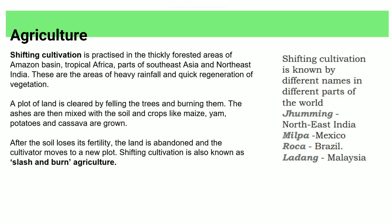Shifting cultivation is practiced in the Amazon, Tropical Africa, Northeast India, and other regions. These areas have heavy rainfall. A plot of land is cleared by felling trees and burning them, and the ash enriches the soil. Crops such as potatoes are grown until the soil fertility is exhausted, then farmers move to a new plot.